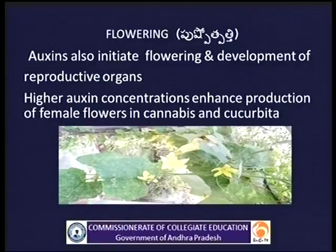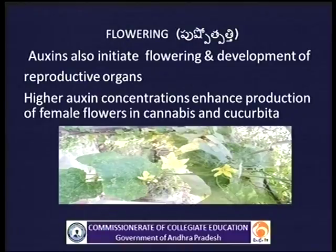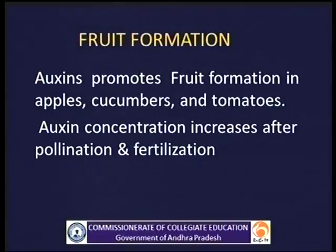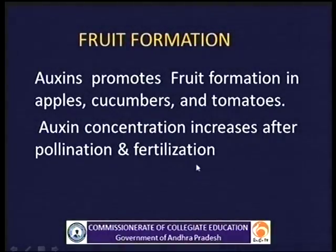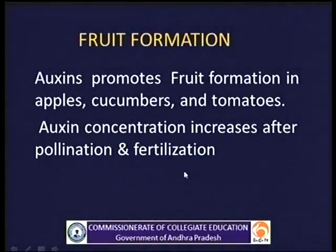Auxins initiate flowering and development of the reproductive organs. Higher auxin concentrations enhance the production of female flowers in Cucurbita and Cannabis. Auxins promote fruit formation in apples, cucumbers and tomatoes. Auxin concentration increases after pollination and fertilization.